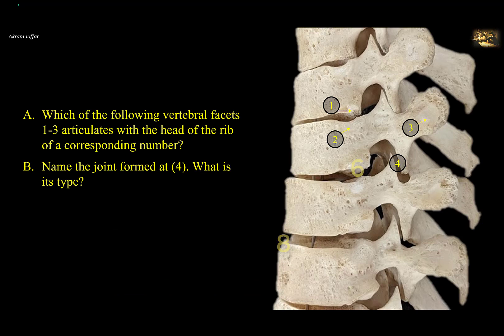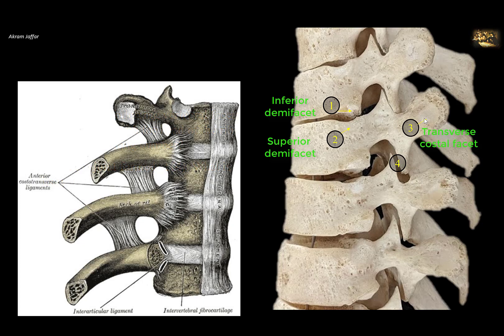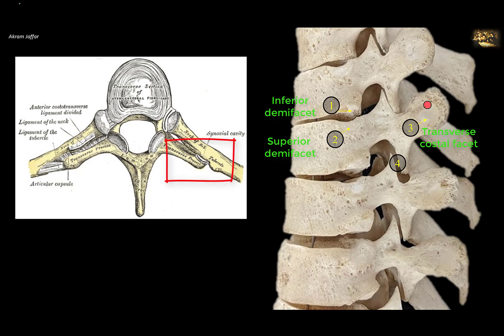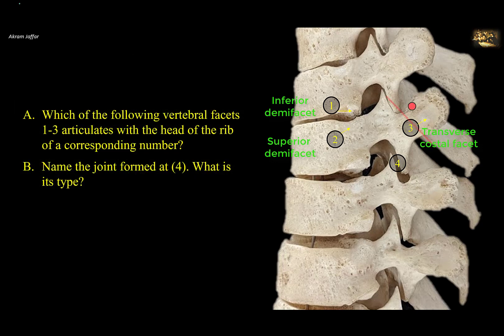Which of the following vertebral facets, 1 to 3, articulates with the head of the rib of a corresponding number? Name the joint formed at 4 and what is its type? Number 1 is an inferior demifacet on the body of a thoracic vertebra; 2 is a superior demifacet on the body; and 3 is a facet on the transverse process. Ribs 1 to 10 articulate by their heads with the bodies of the vertebrae and by their tubercle with the transverse processes of the numerically corresponding vertebrae. Therefore, 3 is excluded because it articulates with the tubercle, not the head.